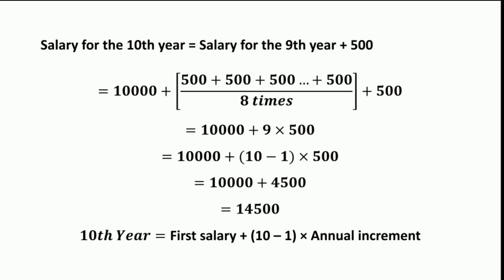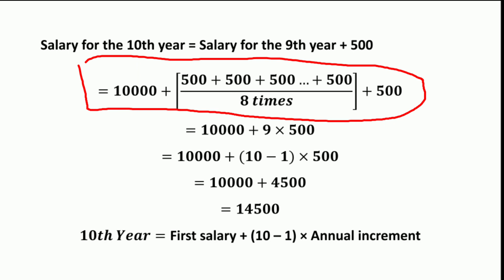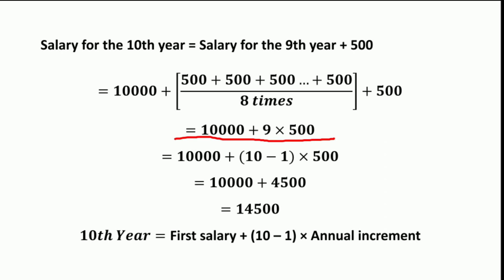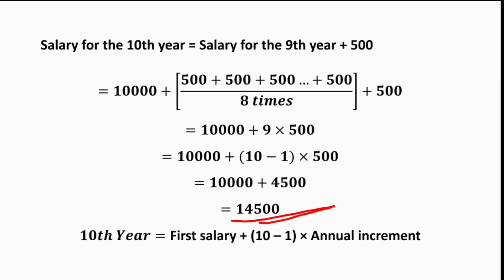The salary for the 10th year equals the salary of the 9th year plus 500. The salary of the 9th year equals 10,000 plus 500 added eight times, plus Rs. 500. So it equals 10,000 plus 9 times Rs. 500. We can also write this as 10,000 plus (10 minus 1) × 500, which is 10,000 plus 4,500, equal to 14,500.